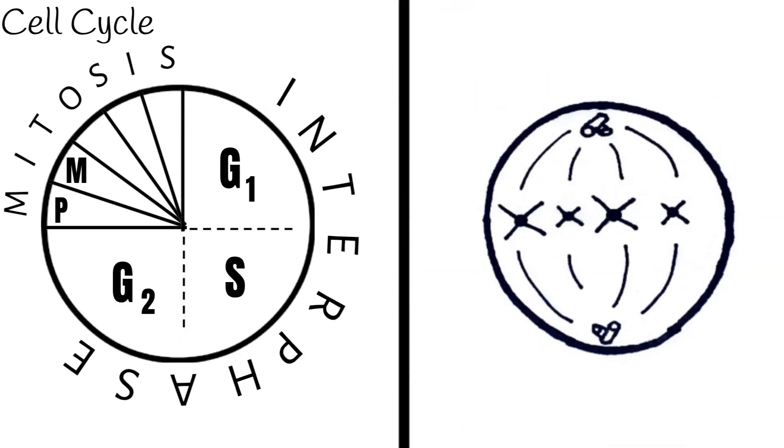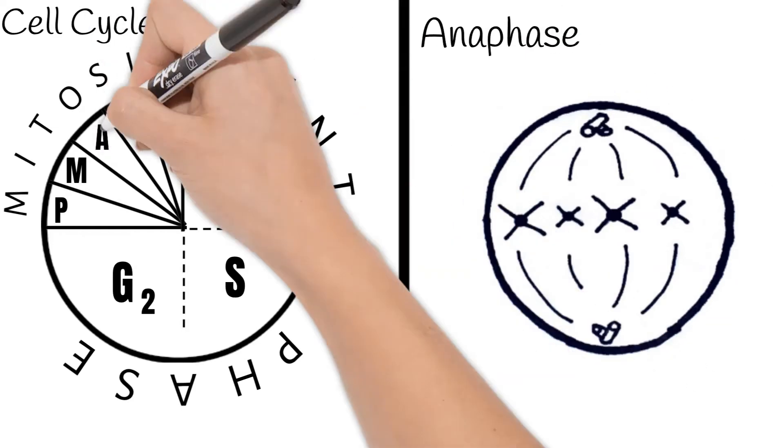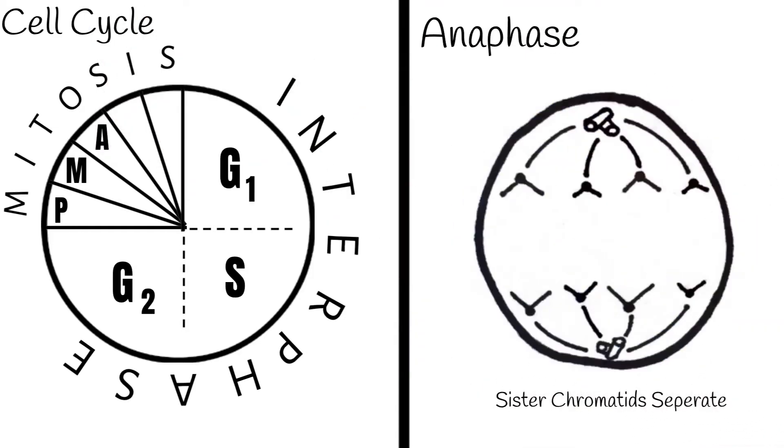During anaphase, the sister chromatids separate at the centromere and move to separate sides. They do this from those spindle fibers pulling on them.